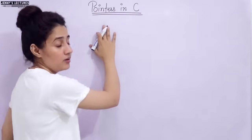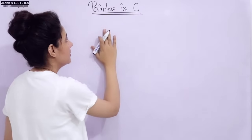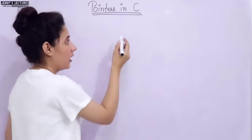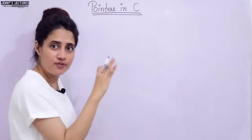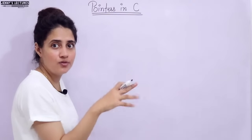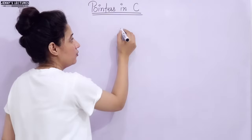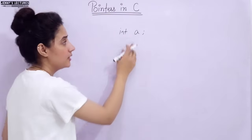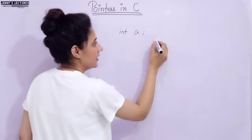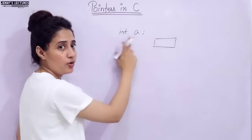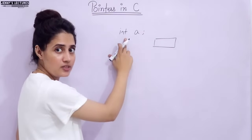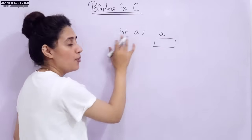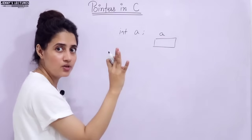Before discussing pointers, I just want to recap variables. What is a variable? How to declare a variable? We have some fundamental data types in C, like int, float, double, char. Suppose I want to declare a variable of type int — this is a variable name. If this is the case, declaration means space would be allocated to this variable.